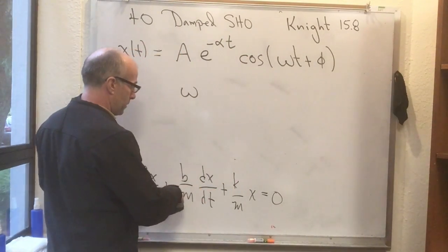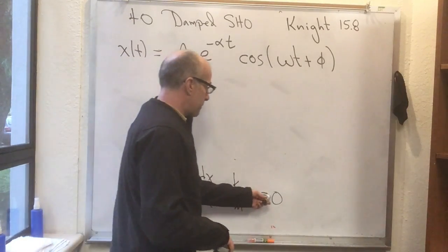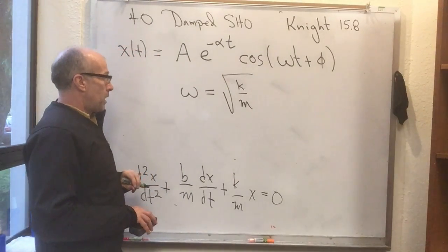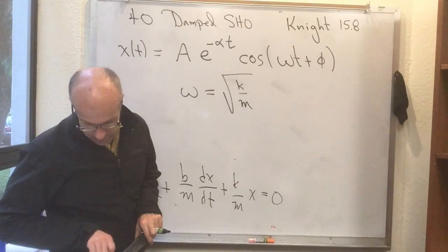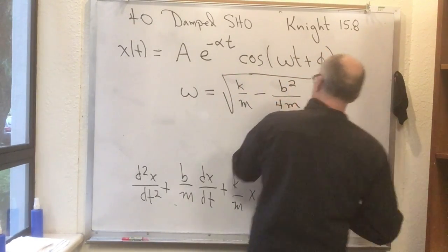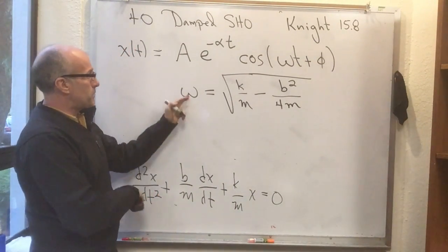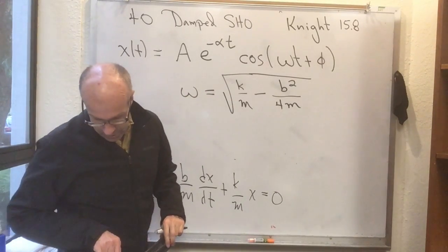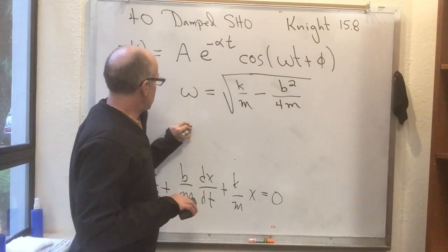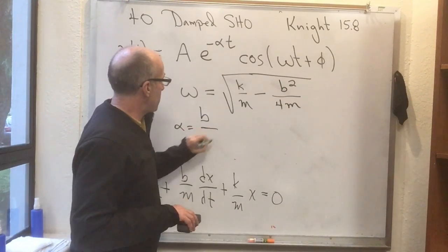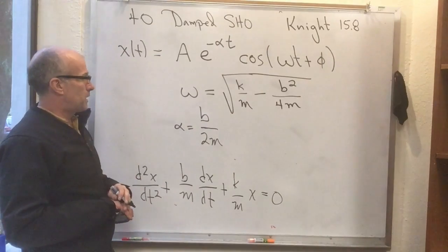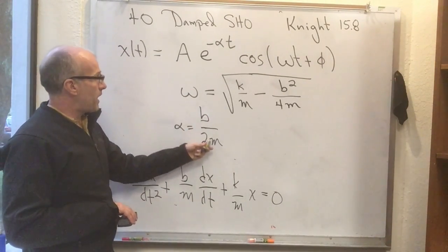Now actually that guess turns out to work, but you have to know what omega and alpha are. Remember before when we didn't have a b term, when it was just d²x/dt² plus k over m times x equals zero, then omega was equal to the square root of k over m. Unfortunately it's not quite so easy now. I have to look at Knight to see exactly what it is. It's omega equals the square root of k/m minus b² over 4m. And then what the heck is alpha here? This is part of what makes the guess work. You also have to have a thing that makes the right decay rate to make this work. And it turns out the decay rate is alpha equals b over 2m.